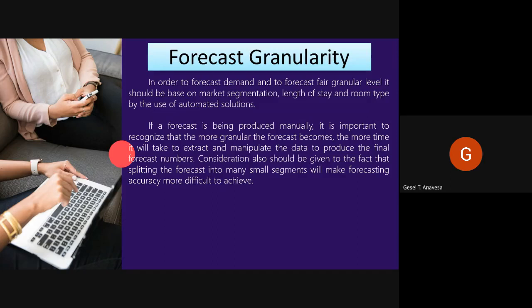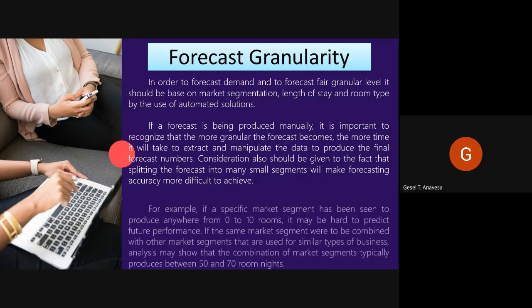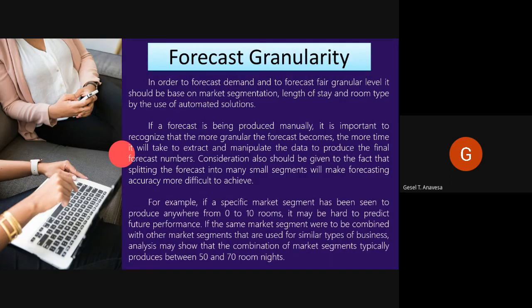Consideration should also be given to the fact that splitting the forecast into many small segments will make forecasting accuracy more difficult to achieve. For example, if a specific market segment has been seen to produce anywhere from 0 to 10 rooms, it may be hard to predict future performance. If the same market segment were combined with similar market segments, analysis may show that the combination typically produces between 50 and 70 rooms per night, achieving a greater level of accuracy.